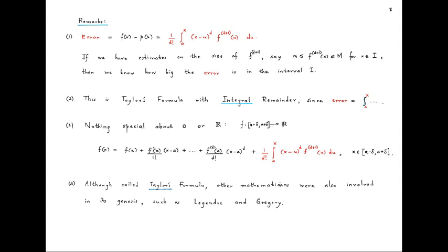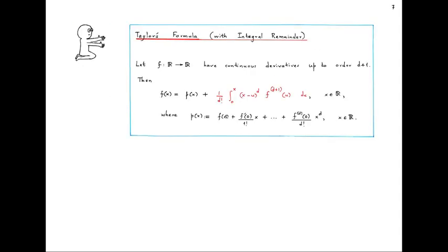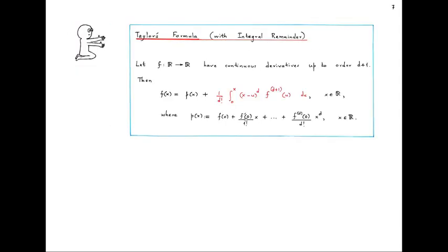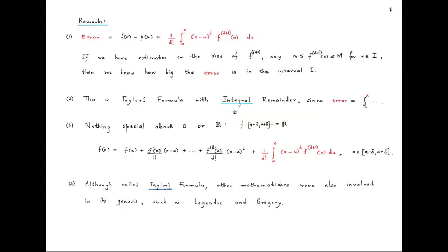There is nothing special about 0 or ℝ. We have been assuming f is from ℝ to ℝ, but instead we could look at f defined on an interval of type (a−δ, a+δ). When constructing the Taylor polynomial, we have been taking successive derivatives of f at 0, but there is nothing special about 0 — we could take derivatives at some point a, and then instead of powers of x we take powers of x minus a. So there is a version of Taylor's formula in that situation where 0 is replaced by a and ℝ is replaced by such an interval. Although it is called Taylor's formula after the English mathematician Brooke Taylor, there were other mathematicians involved in its genesis, such as Legendre and Gregory.